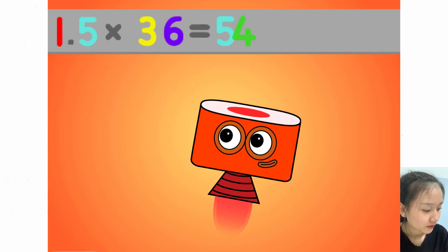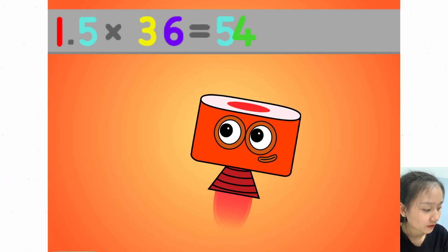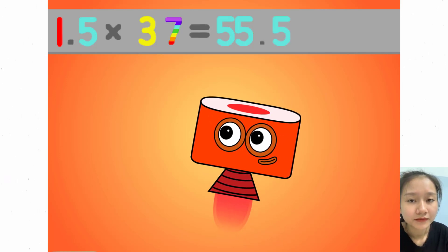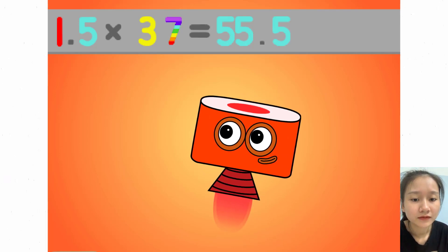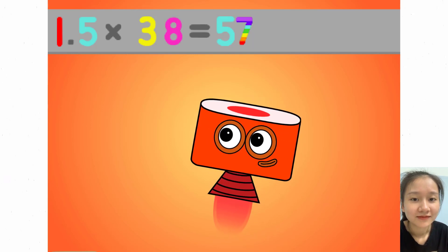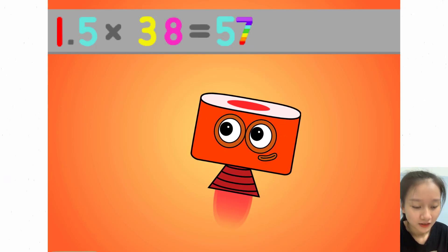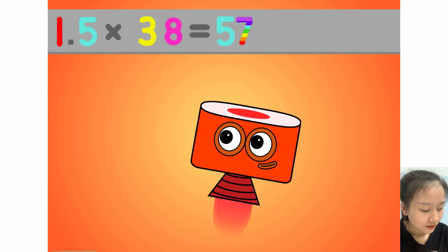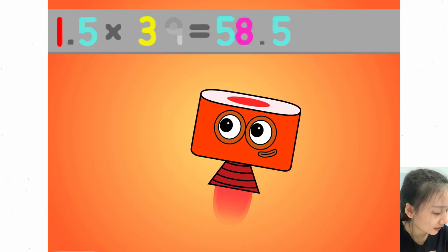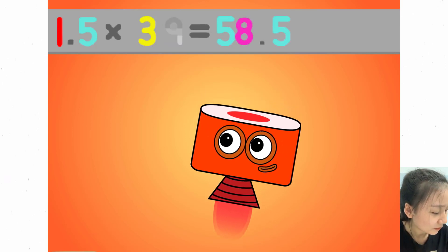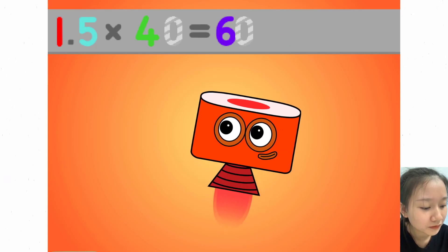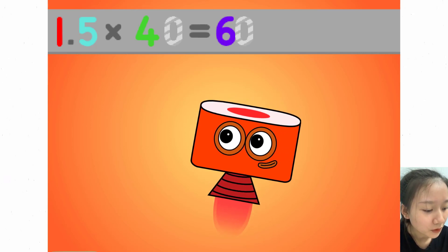1.5 times 36 equals 54. 1.5 times 37 equals 55.5. 1.5 times 38 equals 57. 1.5 times 39 equals 58.5. 1.5 times 40 equals 60.